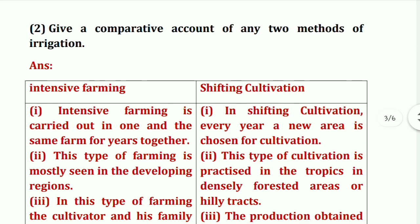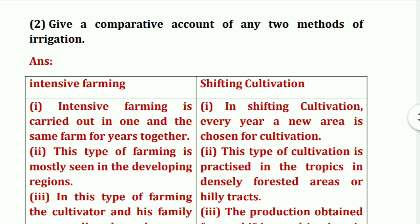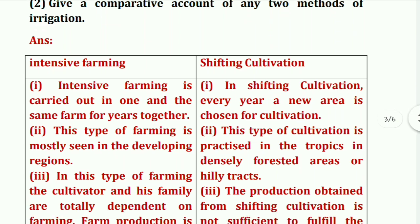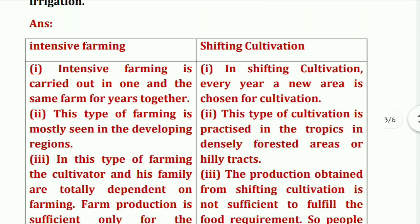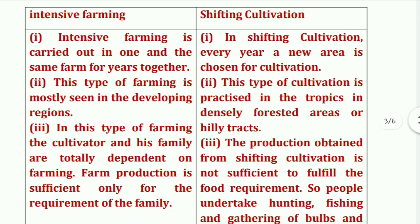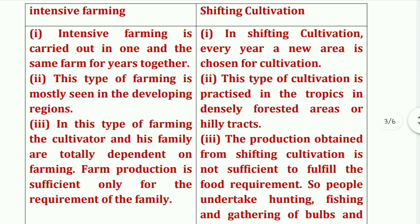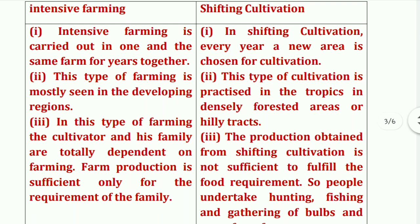Next question: give a comparative account of any two methods of farming. First — intensive farming, second — shifting cultivation. Intensive farming is carried out in one and the same farm for years together. In shifting cultivation, every year a new area is chosen for cultivation. Intensive farming is mostly seen in developing regions, while shifting cultivation is practiced in tropical densely forested areas or hilly tracts.